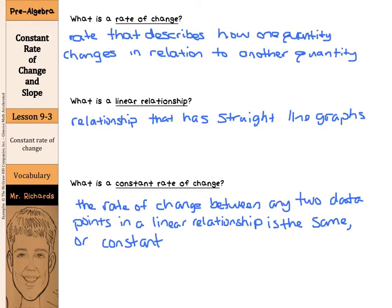So the rate of change is a rate that describes how one quantity changes in relation to another. A linear relationship is a relationship that has straight-line graphs, and you combine the two to help you with constant rate of change. The rate of change between any two data points in a linear relationship is the same or constant.